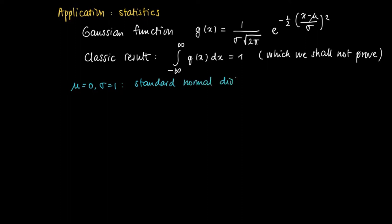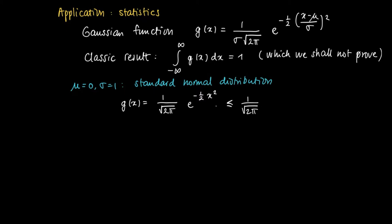The standard normal distribution is a very important distribution. For this choice of parameters, the function g looks like: 1 over square root of 2 pi, times e to the power of minus one half x squared. We will not show that the integral from minus infinity to infinity of g equals 1, but we're going to at least show that it exists, and we do this by applying the comparison theorem.